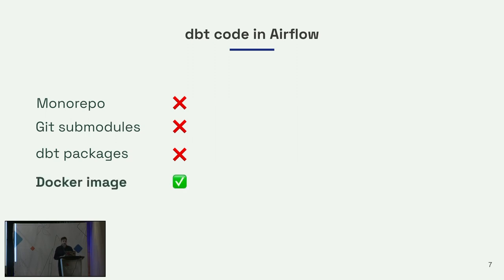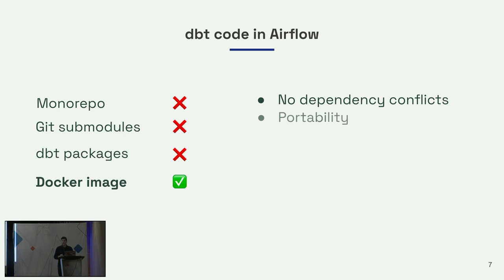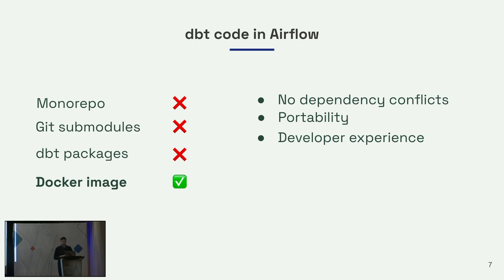We're going to use a Docker image. If you set up an image for your DBT repo, you solve a lot of these problems. You don't have dependency conflicts. You can run whatever version of Python, DBT, the Snowflake connector, or any Python package that you want. And it's highly portable — you can bring the image to Airflow or to any other tool you want to use, including locally for local development. Your developers can all use the same image when contributing to the DBT repo, and you can put in nice utilities and helper functions.